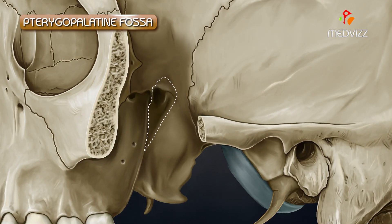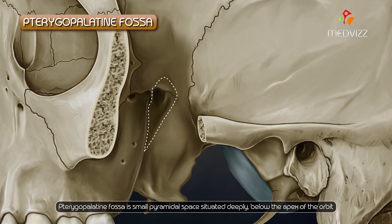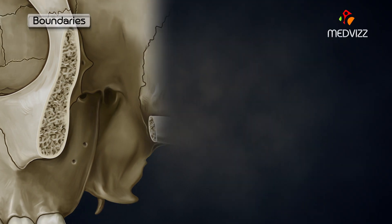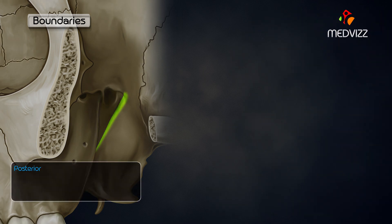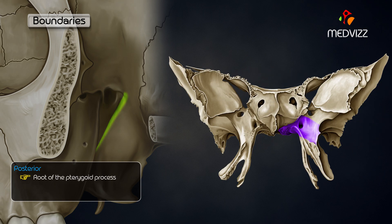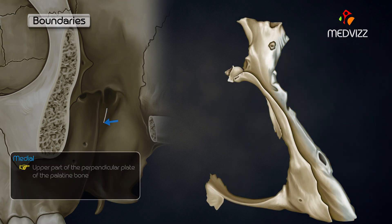The pterygopalatine fossa is a small pyramidal space situated deeply below the apex of the orbit. Its boundaries are: anteriorly, the superior medial part of the posterior surface of the maxilla; posteriorly, the root of the pterygoid process and the adjoining part of the anterior surface of the greater wing of the sphenoid; and medially, the upper part of the perpendicular plate of the palatine bone.